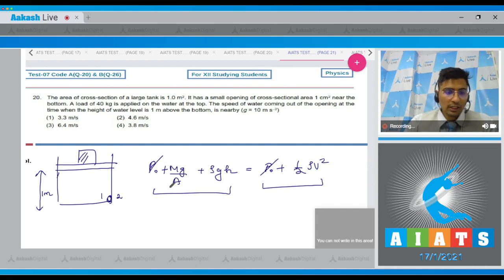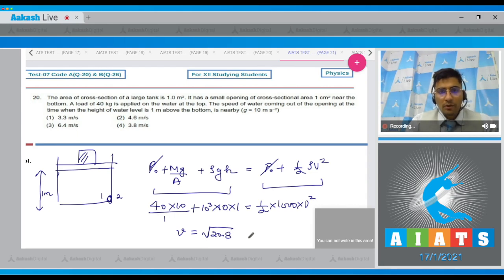We can see that p_0 and p_0 will get cancelled and on substituting the values we write 40 into 10 by 1 plus 10 raised to power 3 plus 10 into 1 is equal to half into 1000 that is the density of water into v square. On solving this we get a value of v to be equal to root of 20.8 that is approximately equal to 4.6 meter per second meaning that for this question the correct answer is option 2.